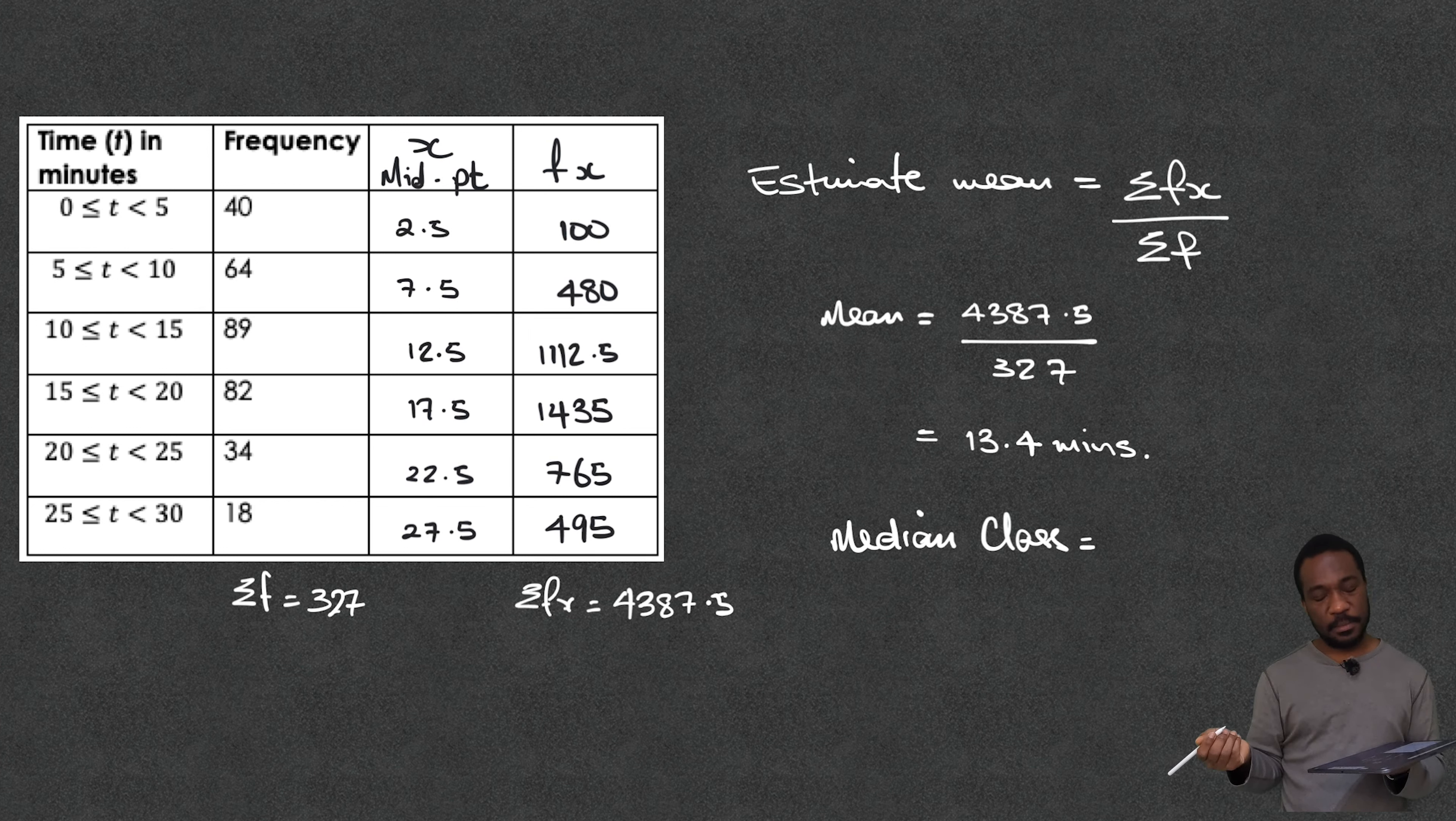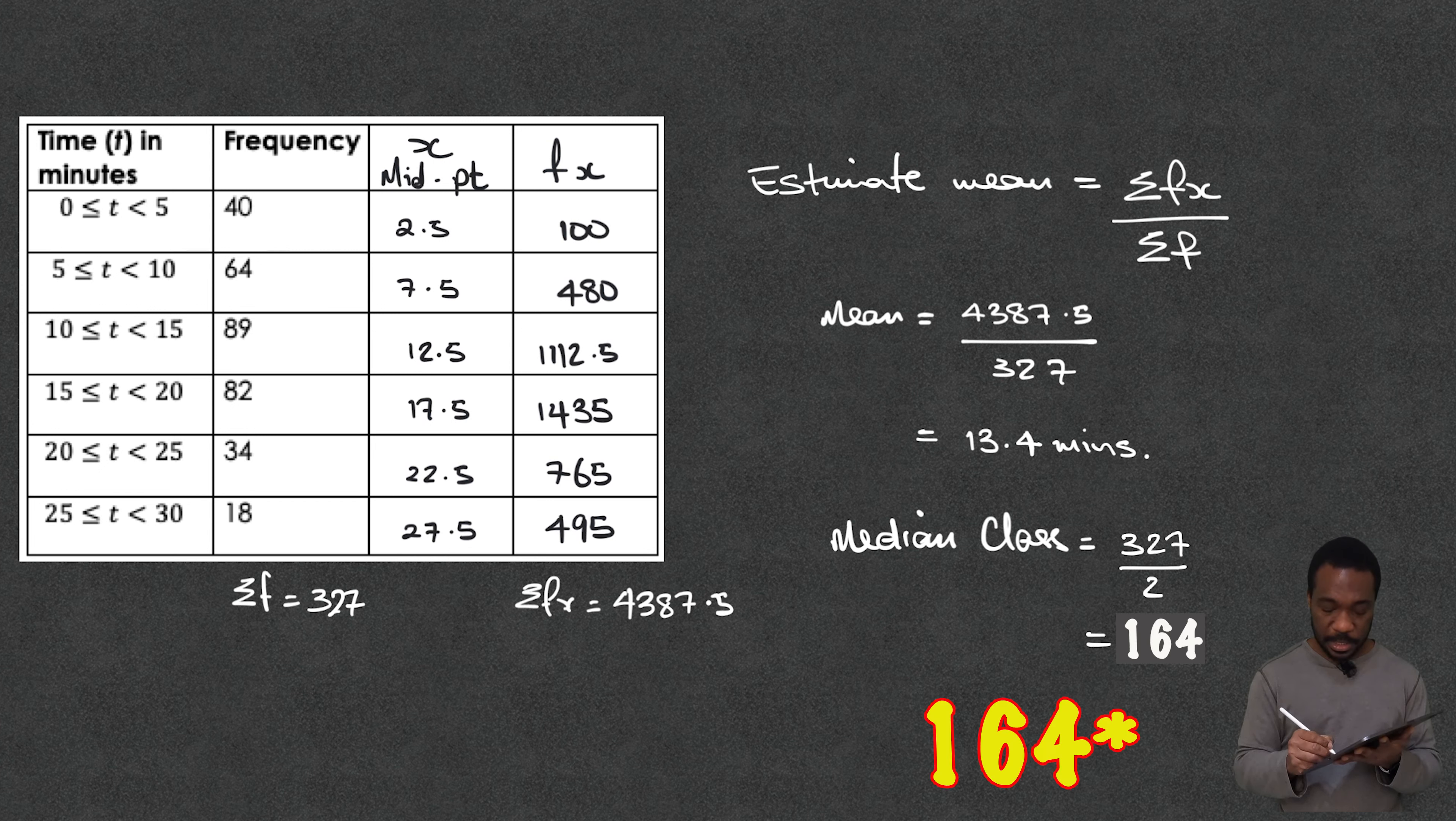Well the median means middle and you can see that the total number of data points I've got is 327. So the median is going to be halfway of 327 so divide that by 2. I'll round that to the nearest whole number. This is going to be about 193 if you round it to the nearest whole number.